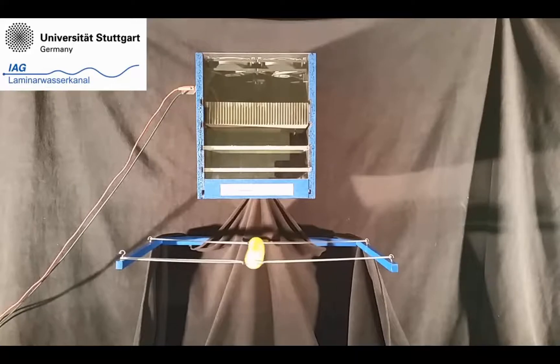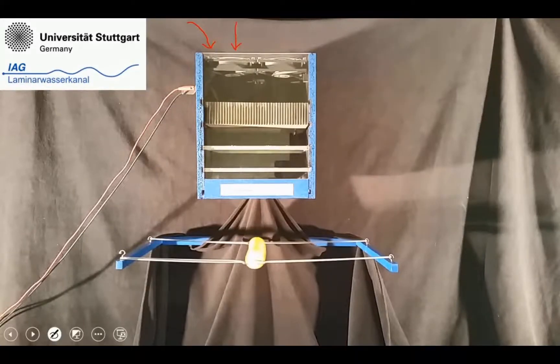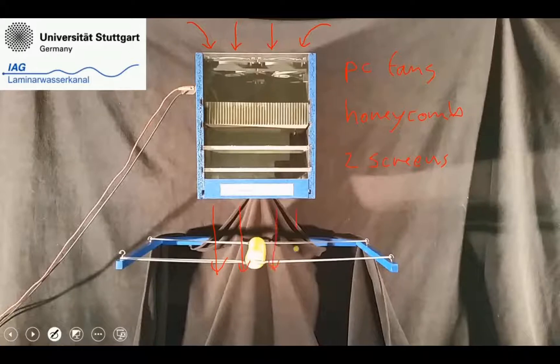The open wind tunnel in this video is very simple and easy to build. Air enters the wind tunnel from the top and is driven by four standard computer fans which are controlled by a laboratory power supply. A honeycomb is installed to reduce the swirl of the flow. Two screens further homogenize the streamwise velocity. Finally the flow exits the wind tunnel as a free jet and excites a model balloon which is suspended by springs.